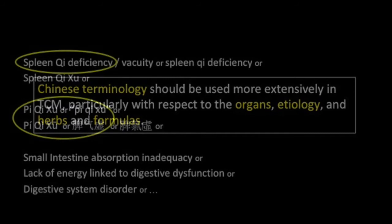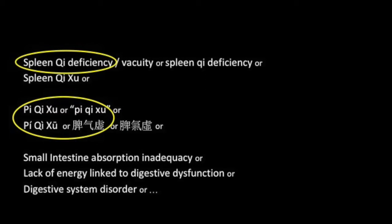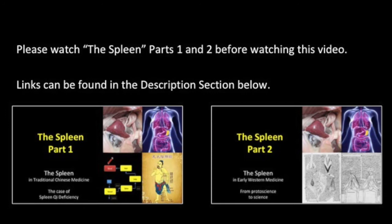Although herb and formula names are now often identified in Chinese, English terms such as 'spleen qi deficiency' instead of the original Chinese term pi qi shu create credibility problems before a scientific audience that is often unwilling to look at a historical or metaphorical explanation.